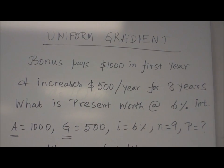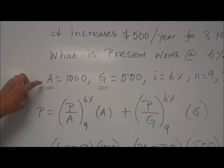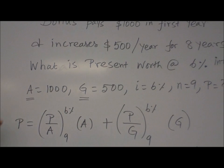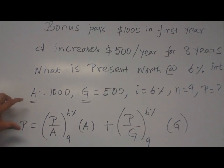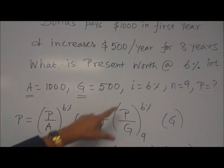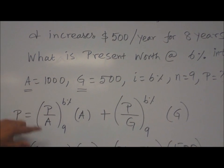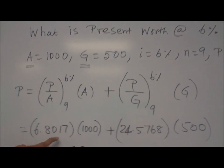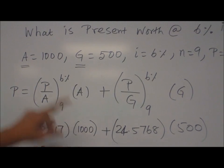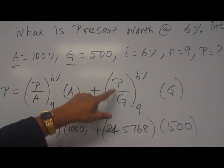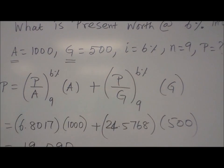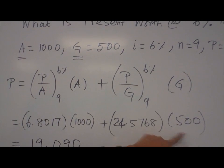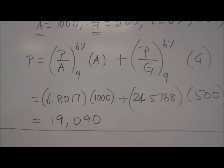So what is the present worth? Now if you look at the problem, we are given A and G. Two parameters are given. We need P. So that means each one we need to find what is the present worth. So P by A times A plus P by G times G. So P by A at six percent interest, N equal to nine. Look at the table. We get 6.8017. Multiplied by A which is one thousand. Similarly P by G for N equal to nine at six percent table. You will read 24.5768. Multiplied by G which is five hundred. Then sum them up. You get 19,090.